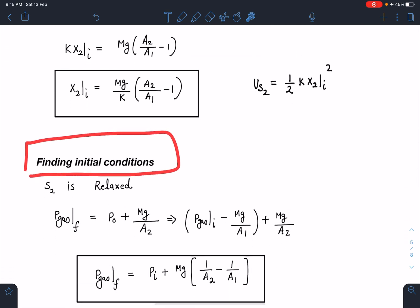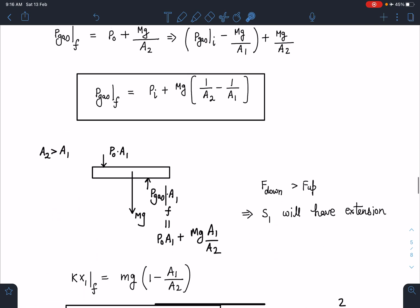For the next part, finally it is given that spring S2 is relaxed and S1 may be compressed or elongated. If S2 is relaxed, we know the pressure in both chambers: P0 plus mg by A2. Initial pressure was given, so I can substitute the value of this P0 in terms of initial pressure using the previous equation. If I simplify, I am going to get final pressure of the gas, which is P_initial plus mg times (1/A2 minus 1/A1). Again, depending on A2 greater than A1 or less than A1, you will see in this situation pressure is falling, and otherwise pressure is going to be more.